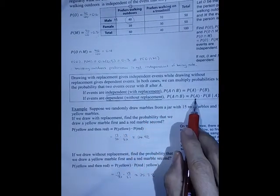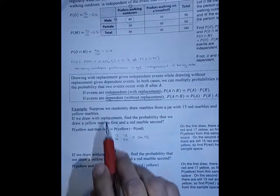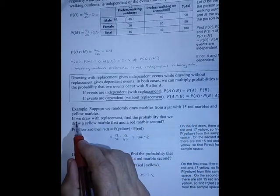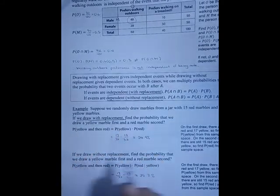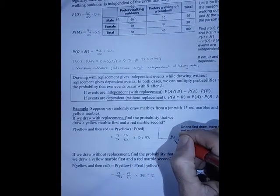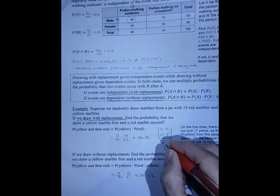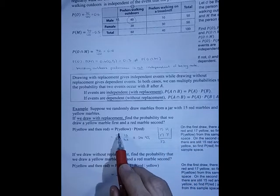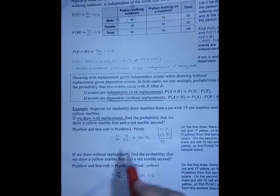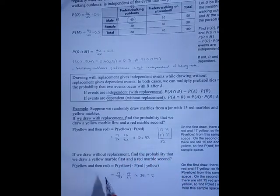Suppose we randomly draw marbles from a jar with 15 red marbles and 17 yellow marbles — 32 total. If we draw with replacement, find the probability that we draw a yellow marble first and a red marble second. The probability that the first one is yellow is 17 out of 32. Then we put it back, so there are still 32 marbles, and the probability of red is 15 out of 32. Multiplying gives about 24.9%.